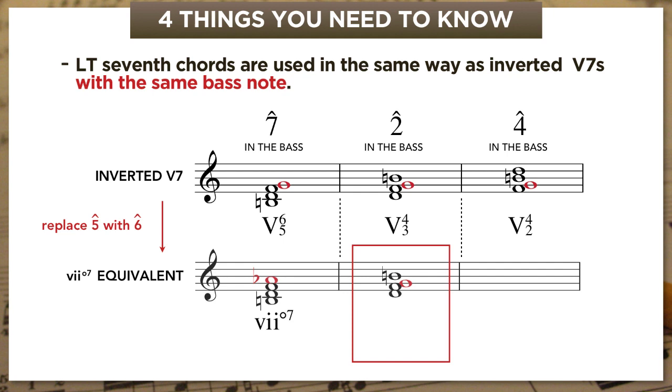And it's the same thing as we go down the line. If we take 5-4-3 and replace scale degree 5 with scale degree 6, we get 7 diminished 6-5, which gets used exactly the same way as V4-3. And then finally, with 5-4-2, we take that G, move it up a half-step, and we've got 7 diminished 4-3, which is its close cousin and functional equivalent.